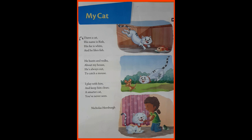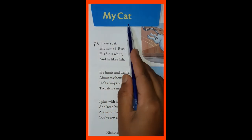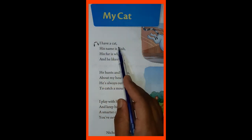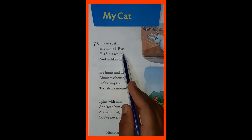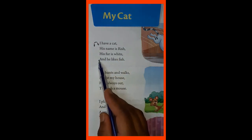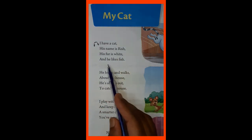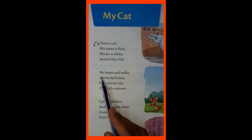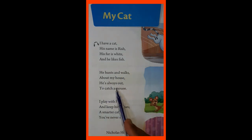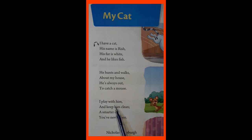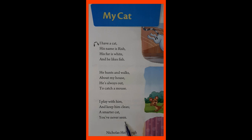Now let's read the poem in the textbook. My Cat. I have a cat. His name is Rish. His fur is white and he likes fish. He hunts and walks about my house. He is always out to catch a mouse. I play with him and keep him clean. A smarter cat you have never seen.